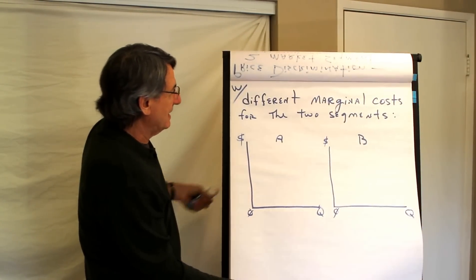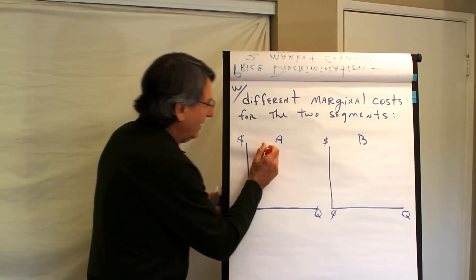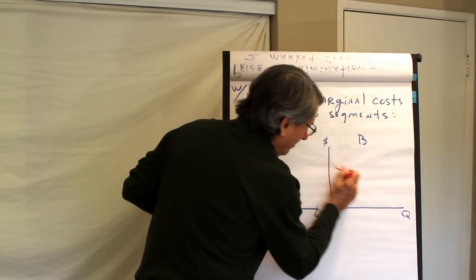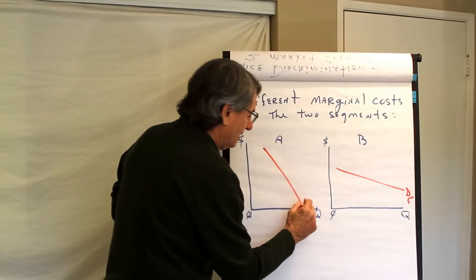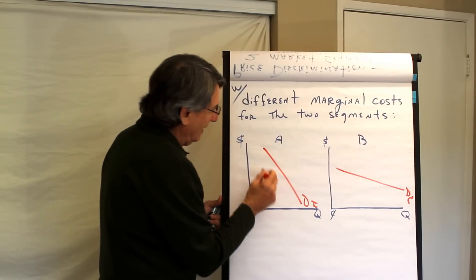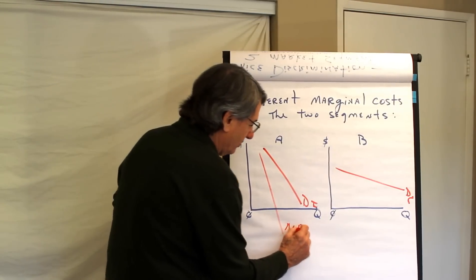Now what if, in the case of like, here we have two different, it's the same setup. We have an elastic group, there's the demand elastic and there's the demand inelastic. And then here's the marginal revenue.